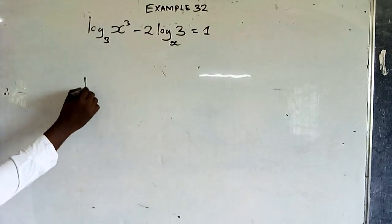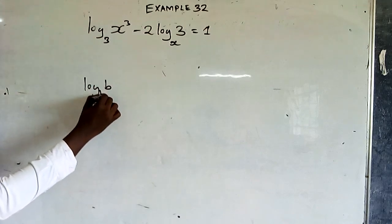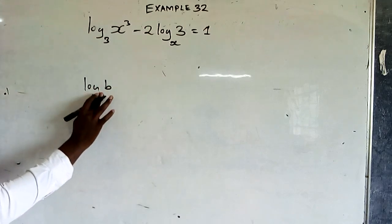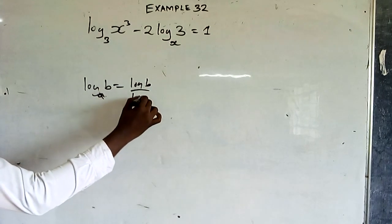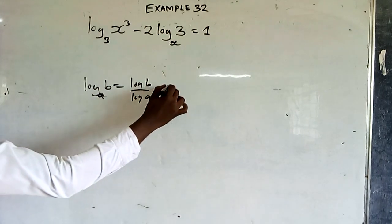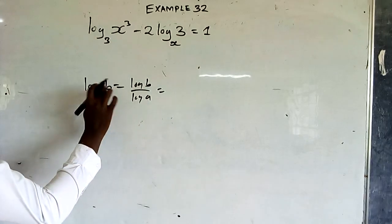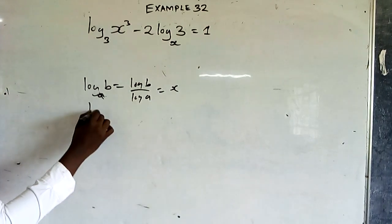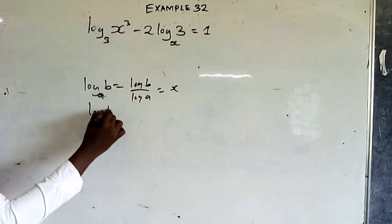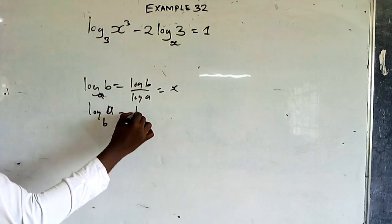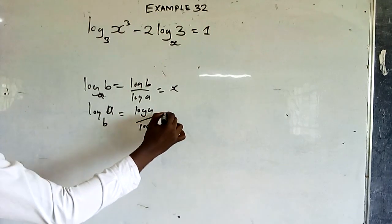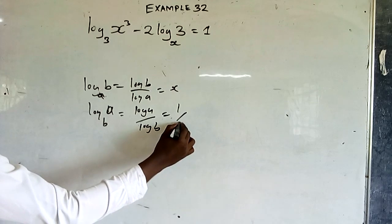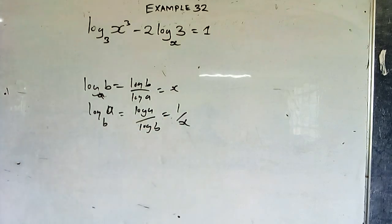You have to recall that log b to base a is the same as log b over log a. So if you let log b to base a equal x, then log a to base b equals log a over log b, which is 1 over x — it is the reciprocal.